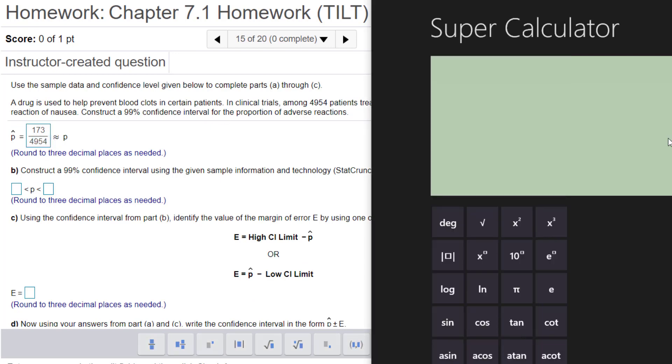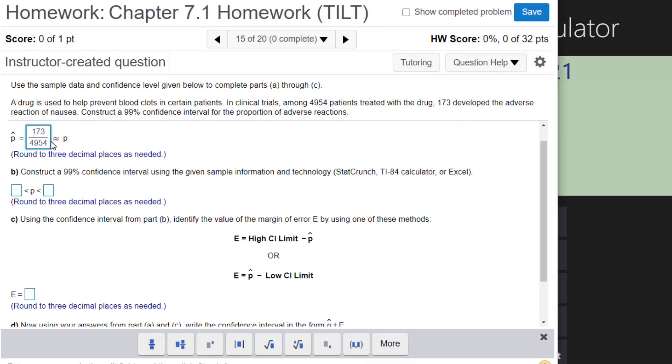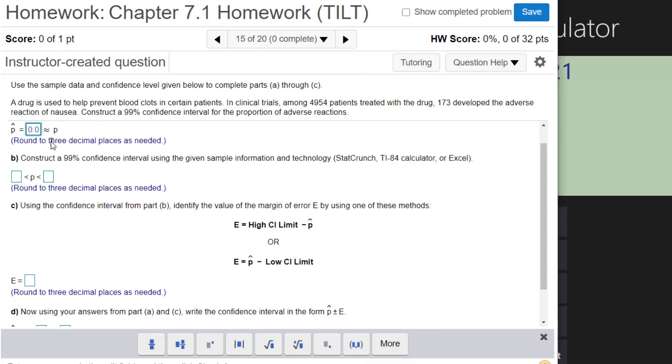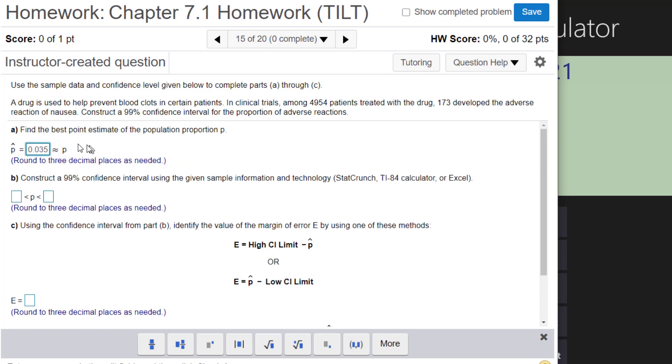So I do want to have a calculator handy where I can do this fraction 173 divided by and then this will be your total number of patients. So once you get this right here it says to round it to three decimal places so it will be 0.035 roughly. So this will be our fraction that we put in here, 0.035. Now that's the middle of our confidence interval when we set it up.